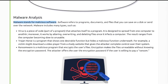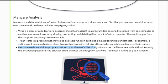Malware includes many types. A virus is a piece of code that attaches itself to a program. A Trojan horse is a program that shows one desirable function but hides a malicious function underneath. Ransomware is a malicious program that encrypts the user's files and then demands the user to pay money, also known as a ransom.